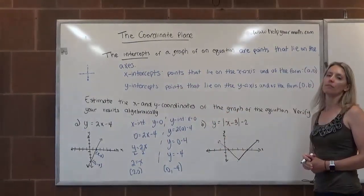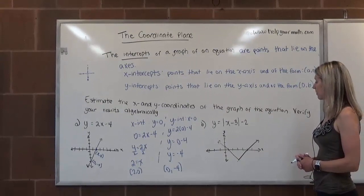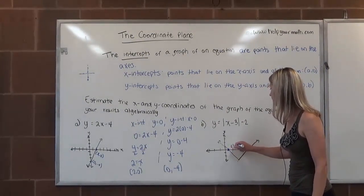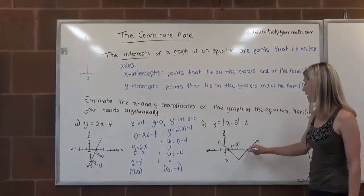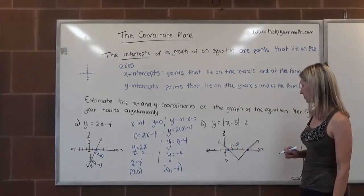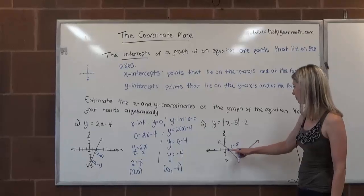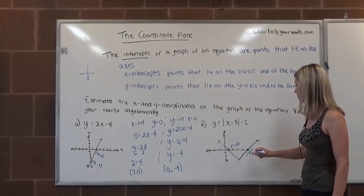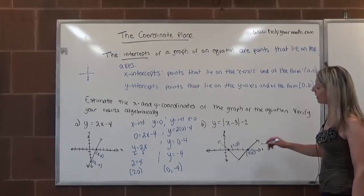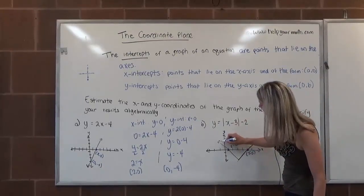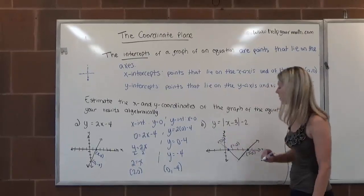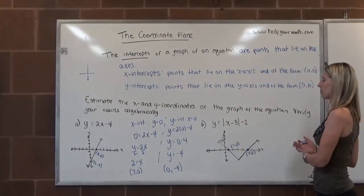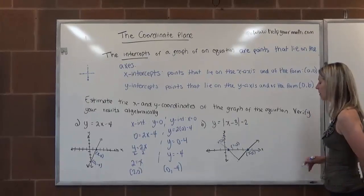In our next example, we're given an absolute value equation. Eyeballing the x-intercepts, it looks like there's one at (1, 0) and another x-intercept at (5, 0) — so we have two x-intercepts. And we have one y-intercept where the graph crosses the y-axis, at (0, 1). We want to verify that the graph represents the actual numbers we came up with.